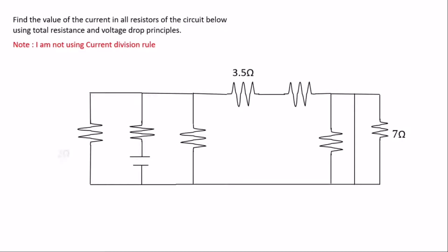There's a diagram given to us for us to find the value of the current in each resistor. We are going to find the current in each of the resistors using the voltage drop principle. As I said, the voltage drop principle applies to resistors arranged in series — they have different voltages but the same current.